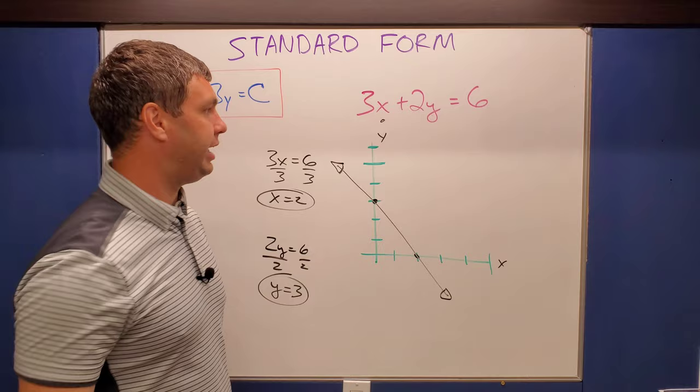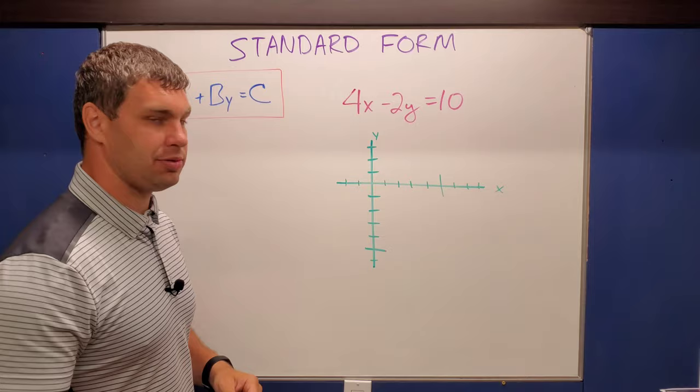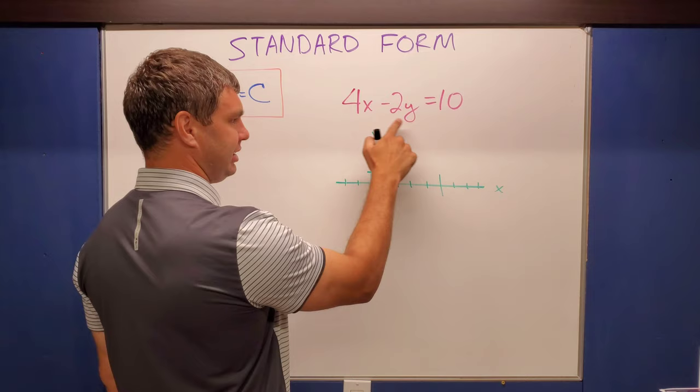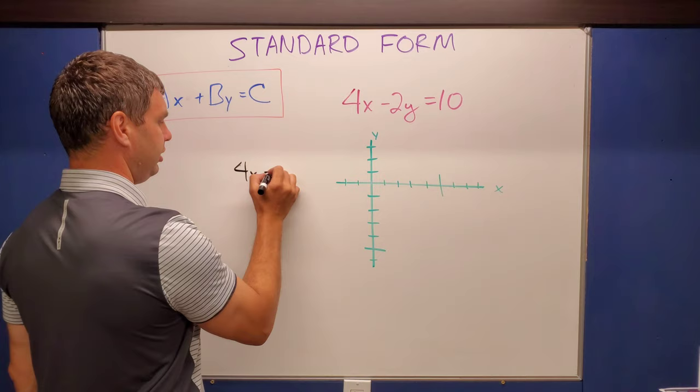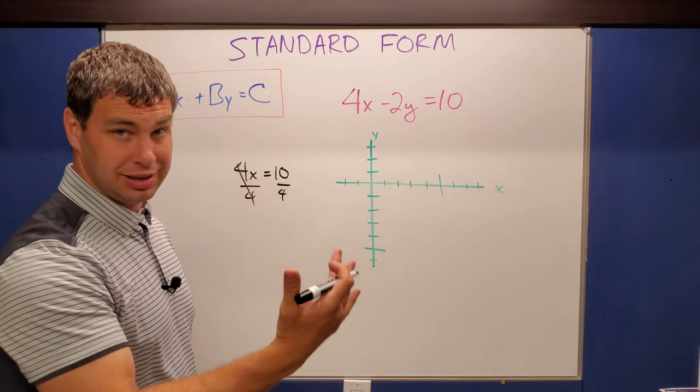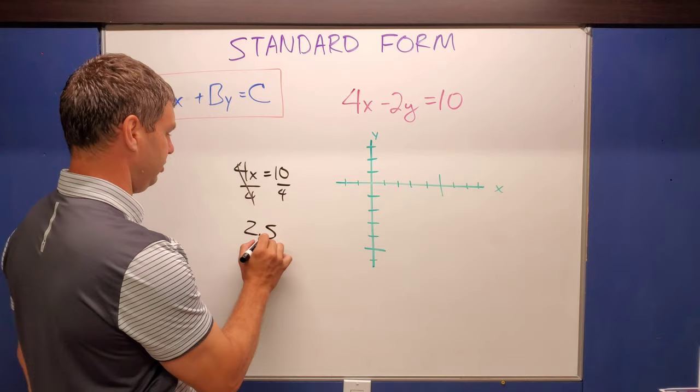Let's try one more. This last example says four x minus two y equals 10. And so if I use that coverup method again, plugging in those zeros, if I want to find the x, I'd plug in zero for y, so it's gone now. And I'd be left with four x equals 10. Notice this one's not gonna turn out nice, because four doesn't go into 10 evenly. 10 divided by four is actually two and a half. So 2.5 is what x is there.